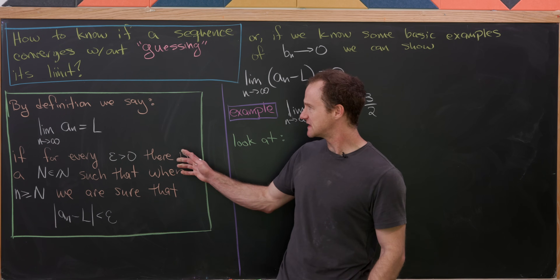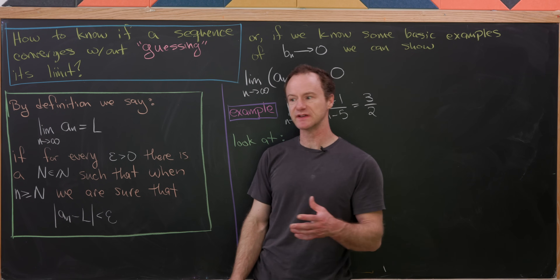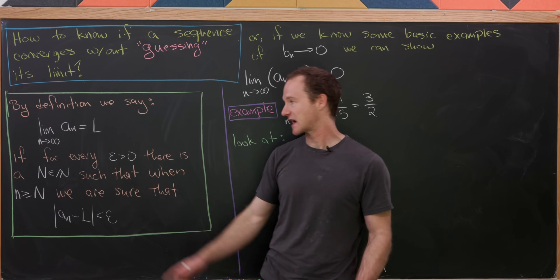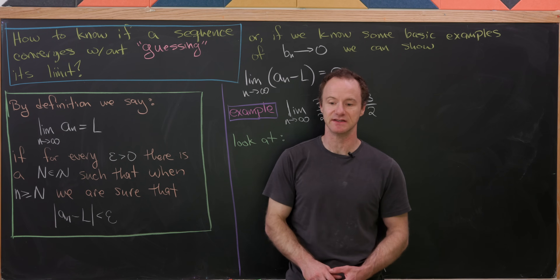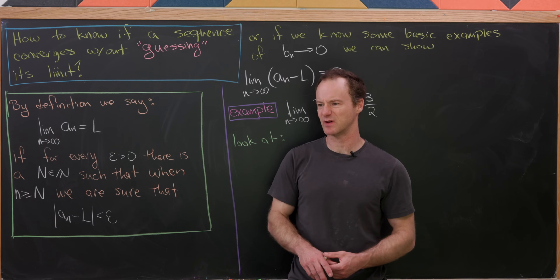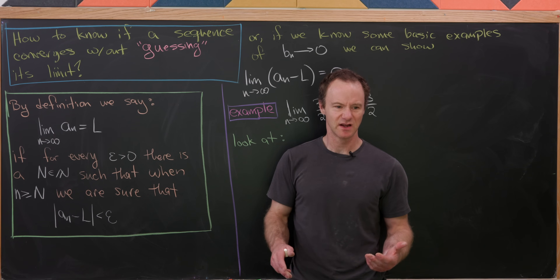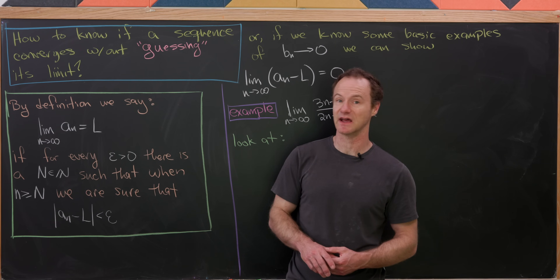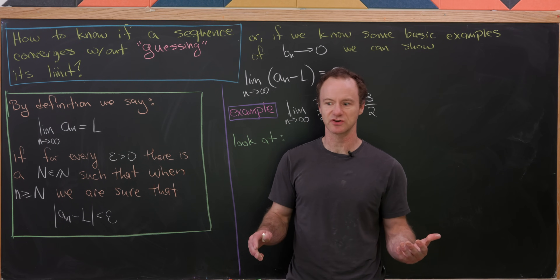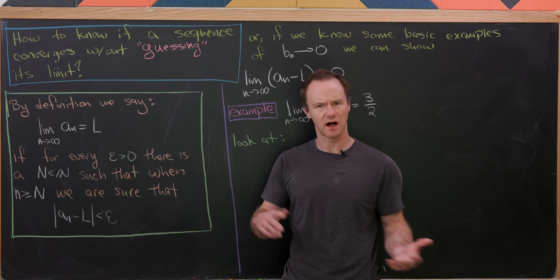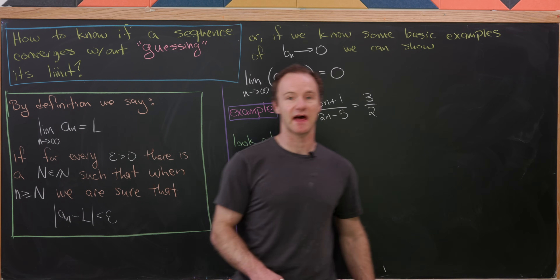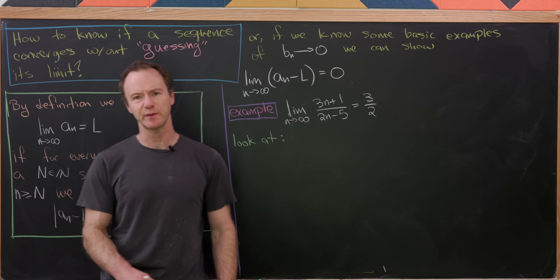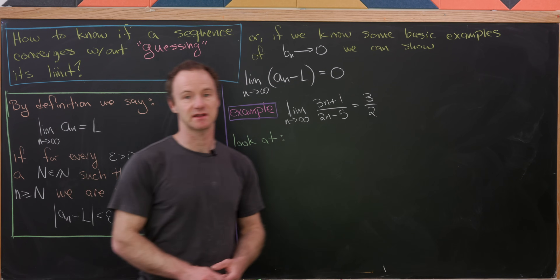Looking at this definition in light of our question, notice that in order to check if something converges using the definition, we in fact need to know what the limit is. Sometimes it's easy to guess, but other times we might be working with a sequence that converges to a brand new constant that hasn't been defined yet. How do we know the sequence converges so that we can define that constant? We'll use a shortcut for this video to avoid mucking about with epsilons and deltas.